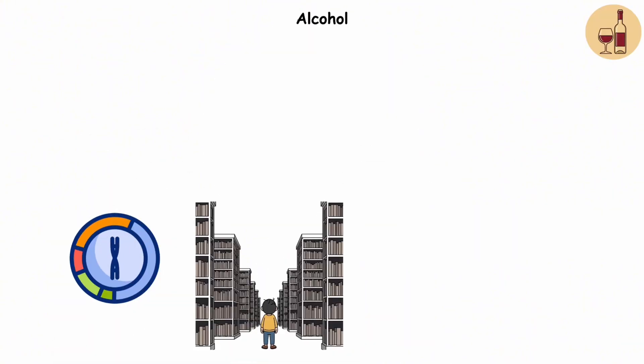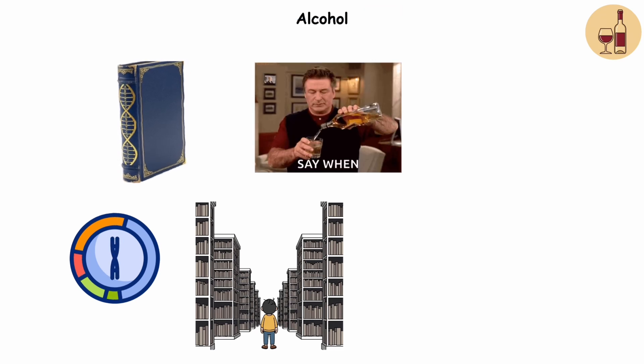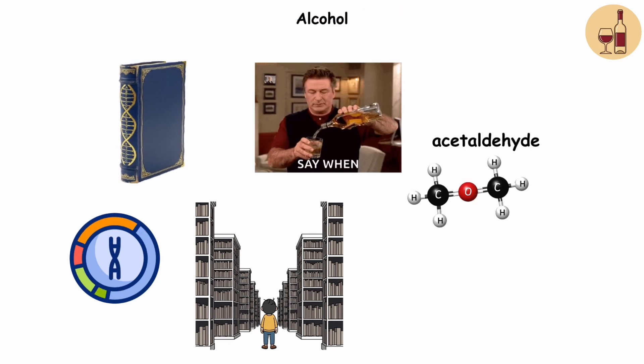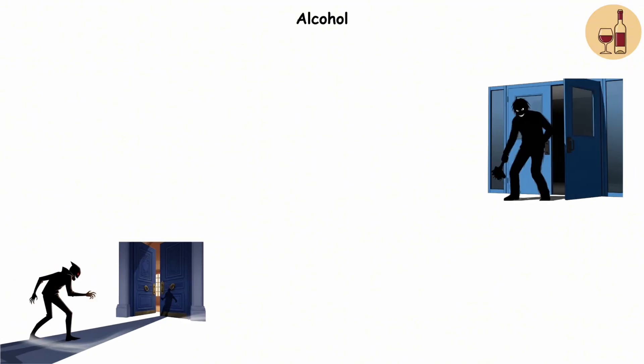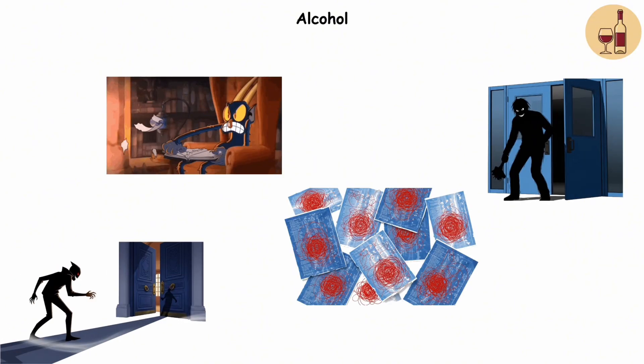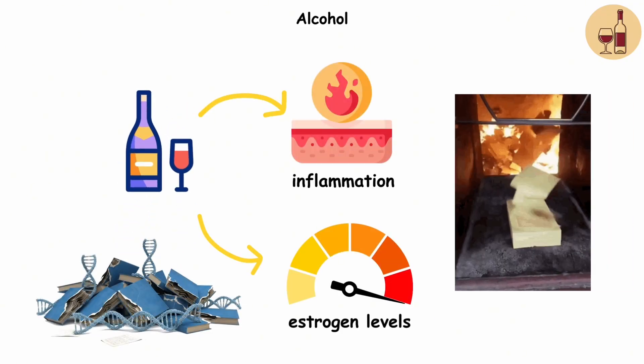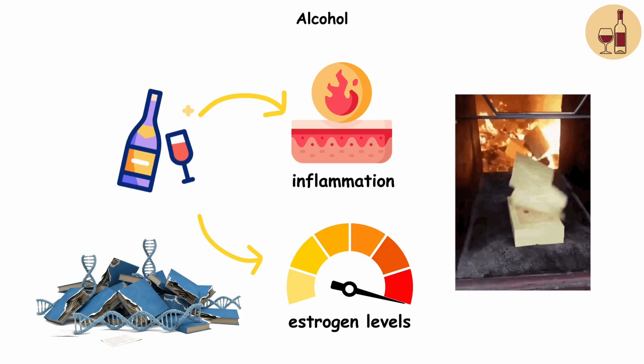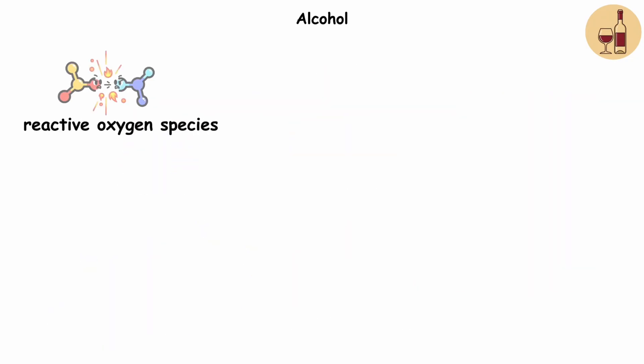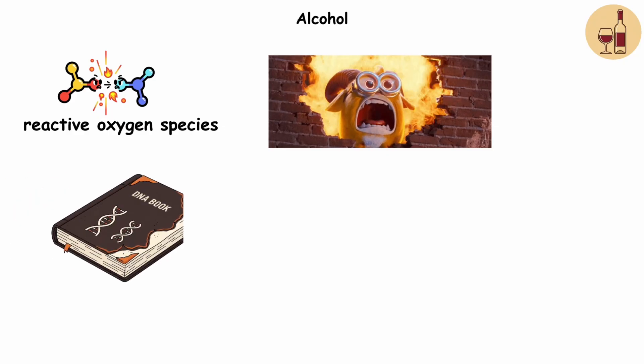Alcohol. Imagine your DNA as a pristine library. Every strand a perfect book, neatly shelved. Now, take a sip of alcohol. Inside your body, it turns into acetaldehyde, a chemical vandal. It doesn't just visit. It storms the library, ripping pages and scribbling nonsense in the margins. But the chaos doesn't stop there. Alcohol sparks inflammation and cranks up estrogen levels like turning up the heat in a library full of fragile manuscripts. It also generates reactive oxygen species, basically tiny arsonists leaving scorch marks on your genetic shelves.